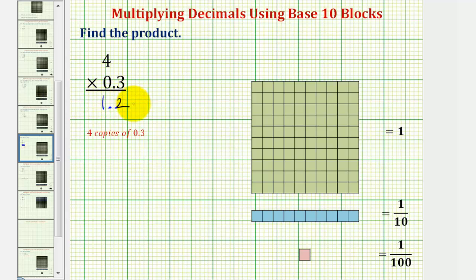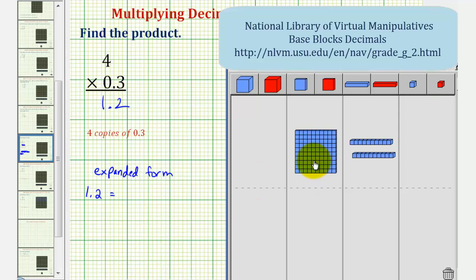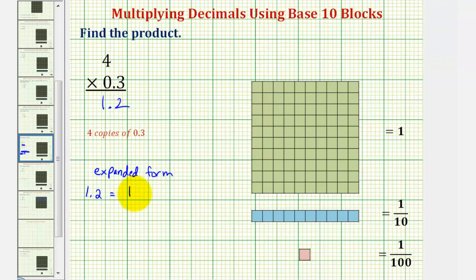If we were asked to express this in expanded form, which actually more closely fits the answer we found using our base ten blocks, one point two equals, in expanded form going back to our base ten blocks, one plus two tenths, or one plus zero point two.